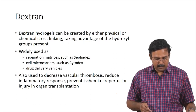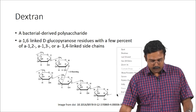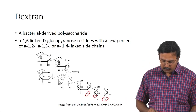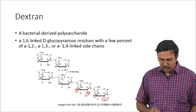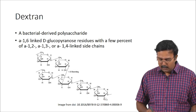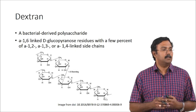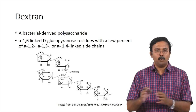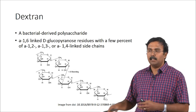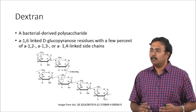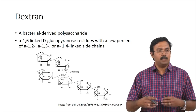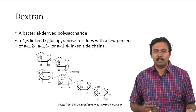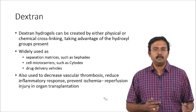Dextran hydrogels can be created either by physical or chemical cross-linking, taking advantage of all the hydroxyl groups that are present. The structure shows a lot of hydroxyl groups — because there are so many, it is actually easy to cross-link them. You can actually have simple hydrogen bonding as physical cross-linking to form nice hydrogels. We will talk about what hydrogels are and how they are formed in a later lecture. Right now I am just talking about the materials that can be used, and then we will talk about how they are fabricated.